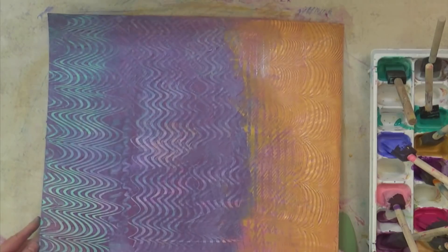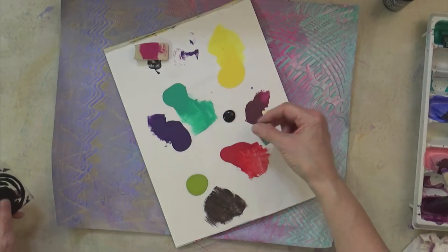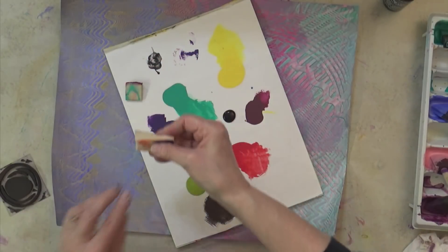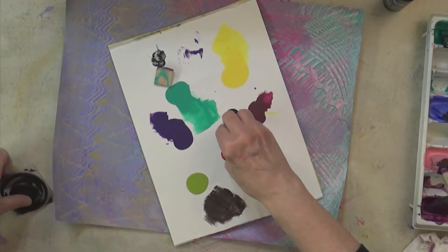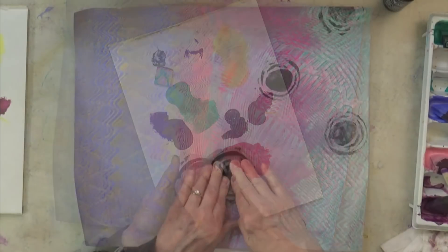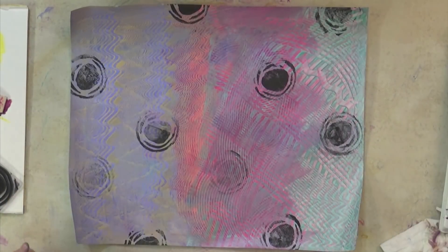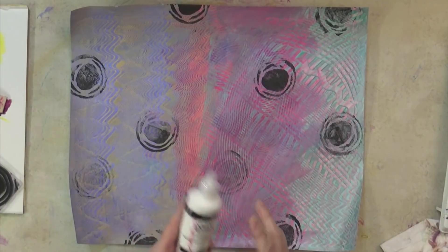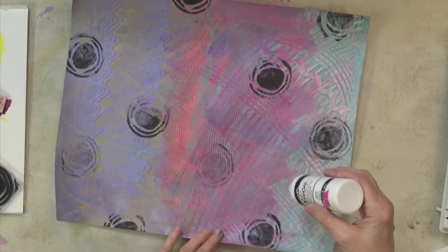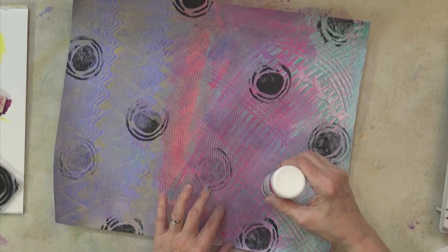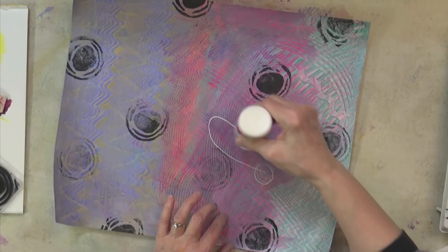We're going to let that be as it is for now. The side of this sponge is soft—clearly I did not clean these sponges. That's just a little bit of stamping. Then I'm going to come in with the Tulip Slick dimensional fabric paint and I'm just going to draw some big old loopy flowers because it's my favorite.